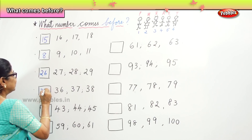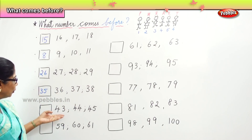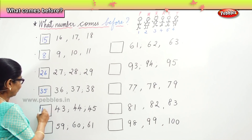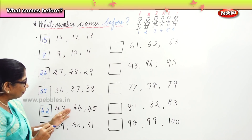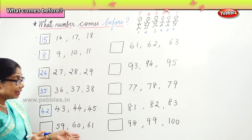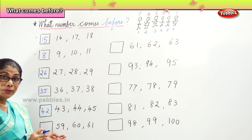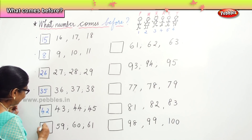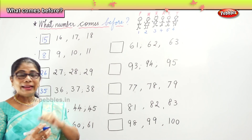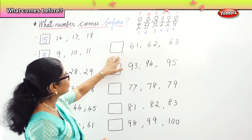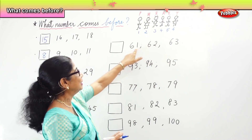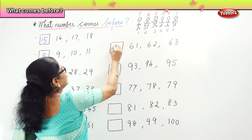Look at the pattern: 35, 36, 37, 38. Now 43, 44, 45 — 3, 4, 5, so before 43 is 42. Very good: 42, 43, 44, 45. Now again, before 59, 60 — before 9 is 8, so 58. See: 58, 59, 60, 61. Now some more exercises. Look at 61, 62, 63 — before 1 is 0, so very good: 60. Excellent: 60, 61, 62, 63.